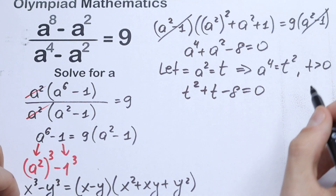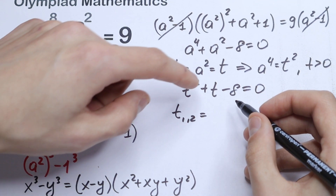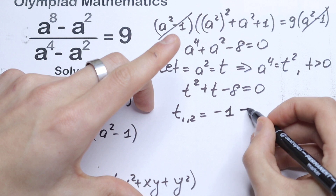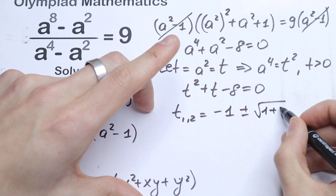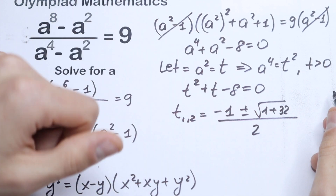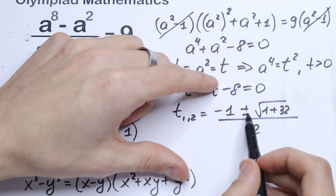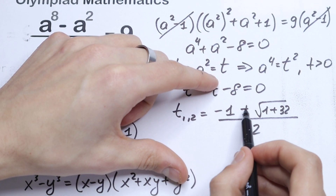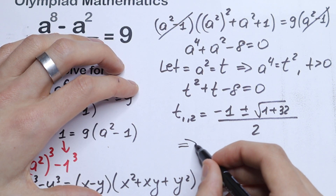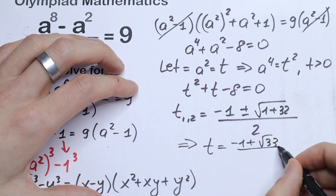Let's find t. This is a classic quadratic equation. Using the quadratic formula, t equals minus 1 plus or minus the square root of 1 plus 4 times 8, all over 2. But take a look — t must be positive. If we take the minus, we will have a negative root. If we take the plus, we will have a positive root. A positive root is exactly what we need. So our t equals minus 1 plus the square root of 33, all over 2.